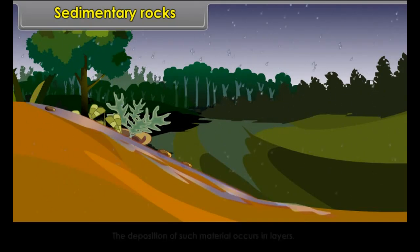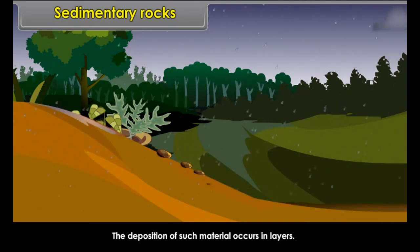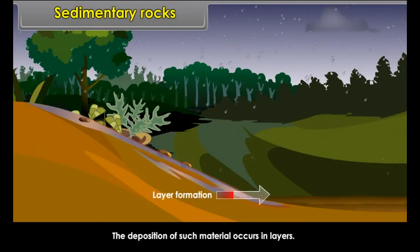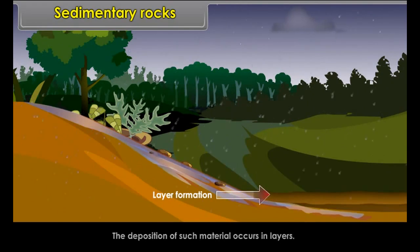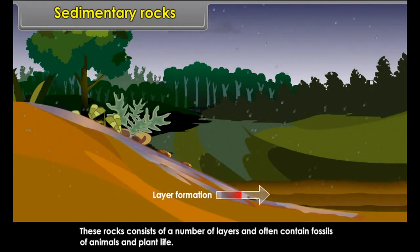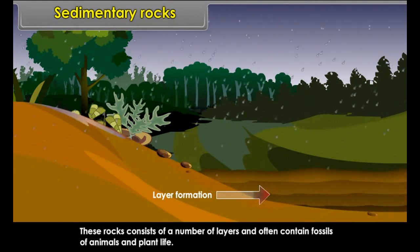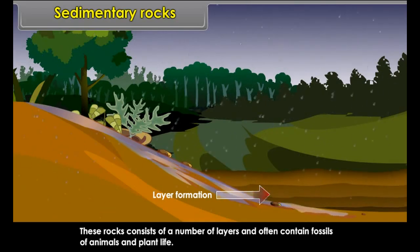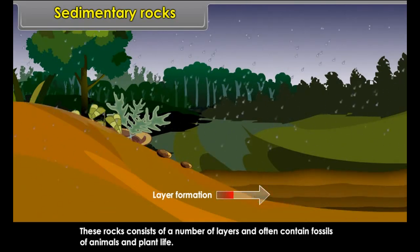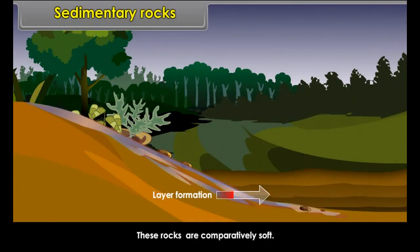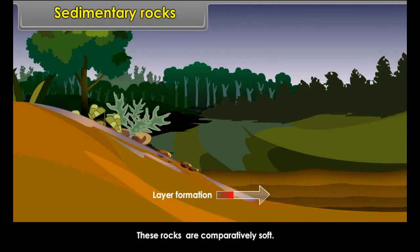Sometimes the magma cools and solidifies at a great depth. Due to very slow cooling, large-size rock crystals are formed very deep down. These deep-seated igneous rocks are known as plutonic rocks.